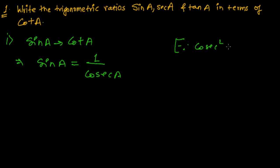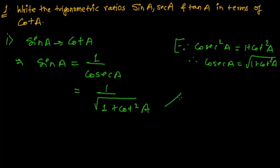cosec square A equals to one plus cot square A. Therefore, cosec A is equals to one plus cot square A but under root. So in the place of one upon cosec A I can easily write now root over one plus cot square A. Like this we have to do the conversion of sin A in terms of cot A.